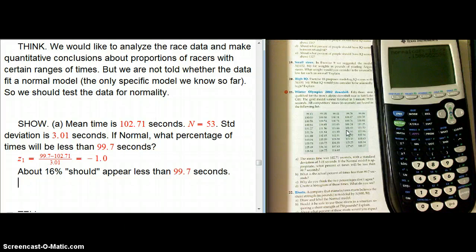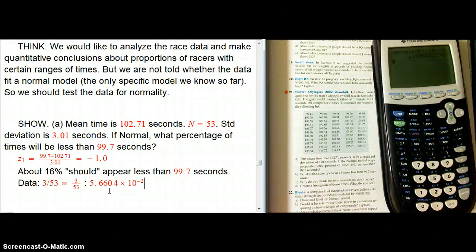So about 16% should appear that are less than 99.7 seconds. Well, in the actual data set, what have we got? If you look at the data, there are just three. 99.13, 0.35, and 0.41. The real data is three out of 53. And let's evaluate that. That's about 5.6%. Significantly less. About a third of what the normal model is telling us. And that's the answer to B, by the way.